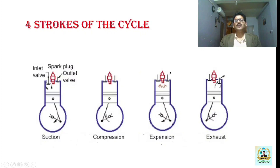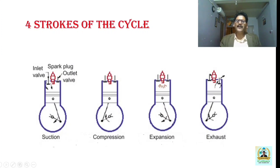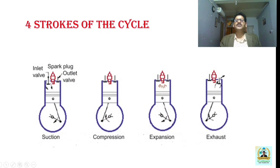In the expansion stroke, both inlet and exhaust valves are closed. The combustion of the air-fuel mixture develops huge thermal and pressure energy, which pushes the piston from TDC to BDC. This is also known as the power stroke because all power is developed during it. In the exhaust stroke, the inlet valve remains closed but the exhaust valve opens, and the piston moves from BDC to TDC, expelling the burnt air-fuel mixture that can no longer produce power.